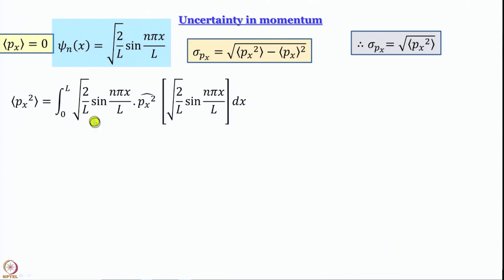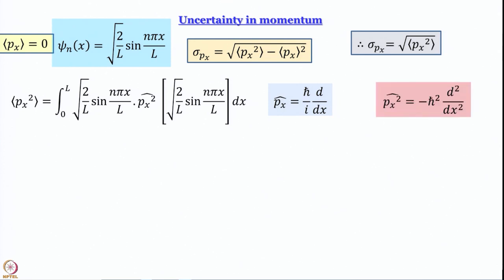All we need to do is find the average value of p_x². We write the wave function — here we have a real wave function so ψ* equals ψ — multiplied by p_x² operating on √(2/L) · sin(nπx/L), then integrate between 0 and L. What is p_x²? It is (ℏ/i)(d/dx) applied twice, giving −ℏ² · d²/dx².